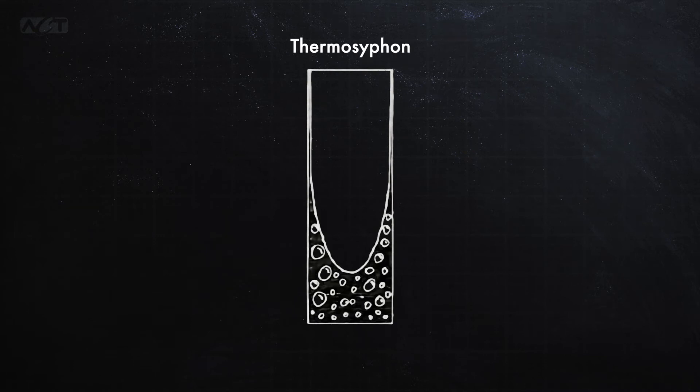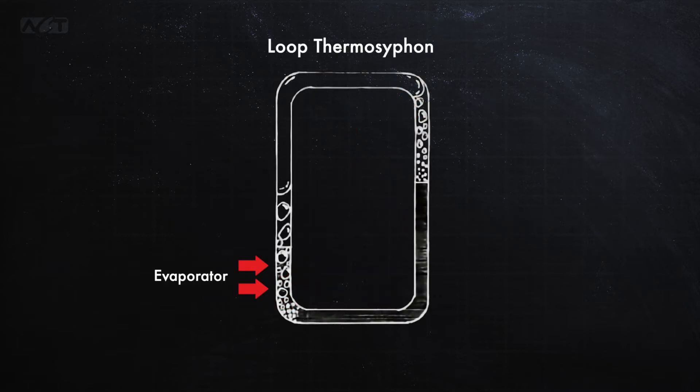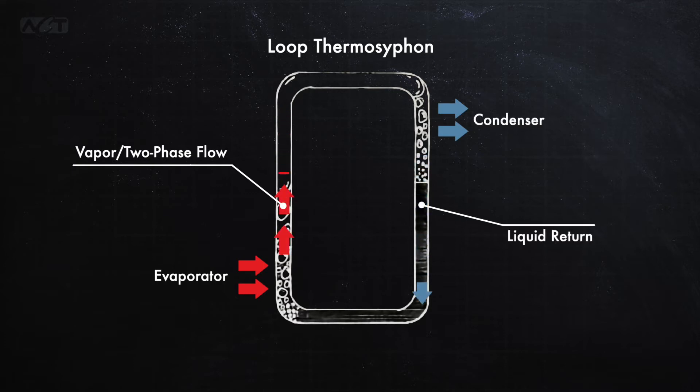A loop thermosyphon operates like a traditional thermosyphon where a two-phase working fluid is transferred from an evaporator to a condenser by taking advantage of the density difference between the liquid and vapor phases. However, unlike a traditional single-tube thermosyphon, the liquid and vapor phases do not flow in the same tube. Rather, the vapor and liquid tubes create a loop giving this thermosyphon its name.